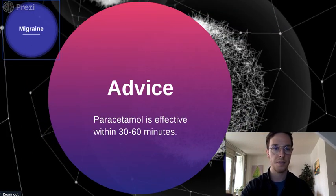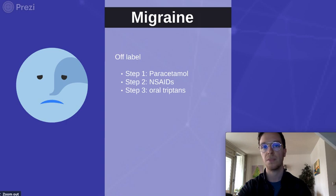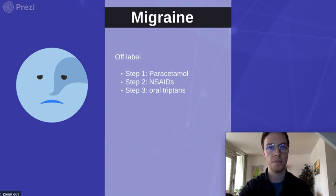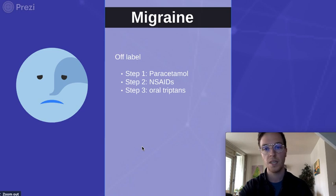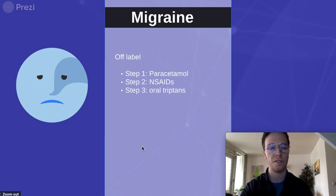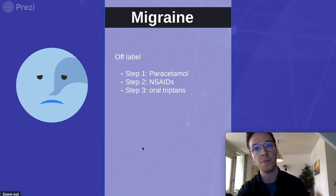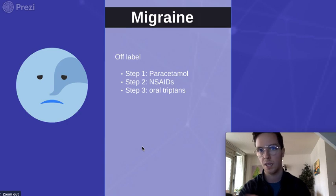Off-label, paracetamol can be used for migraine, and this is only done when someone is experiencing a migraine attack. You can give 1,000 milligrams. The first step is always paracetamol — it's the cheapest and equally effective as steps 2 or 3. So there's no reason not to start with paracetamol. If the effect is undesirable or not enough, you can go to step 2, NSAIDs, or even step 3, oral triptans. But keep in mind, paracetamol is equally effective with fewer side effects.